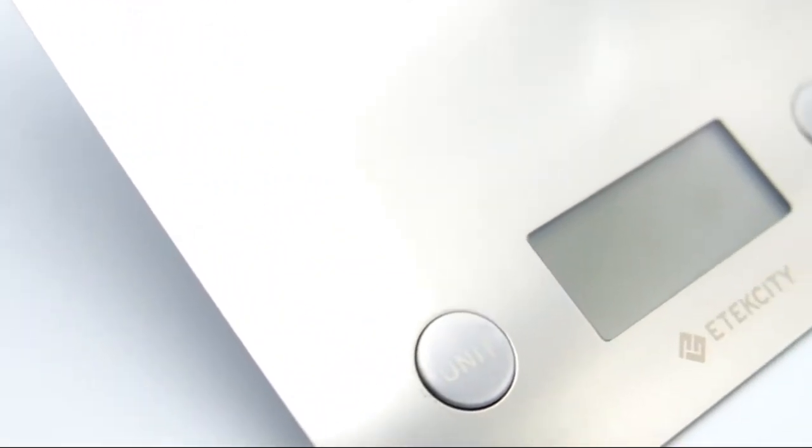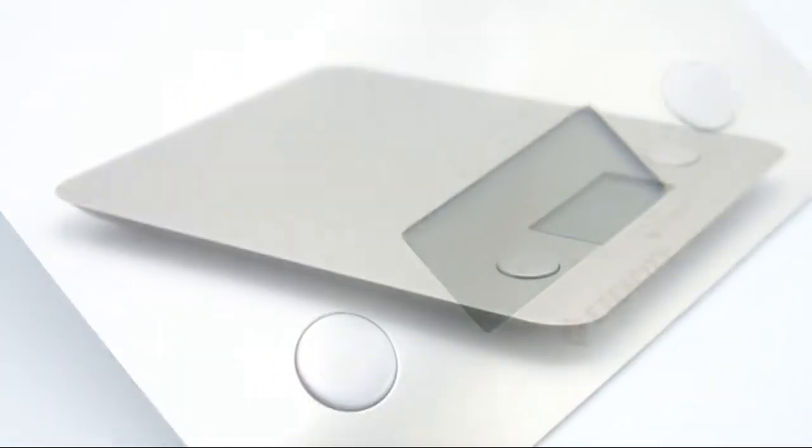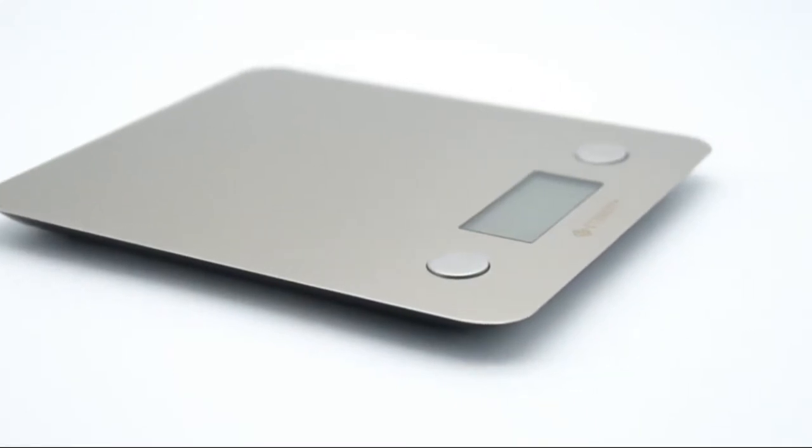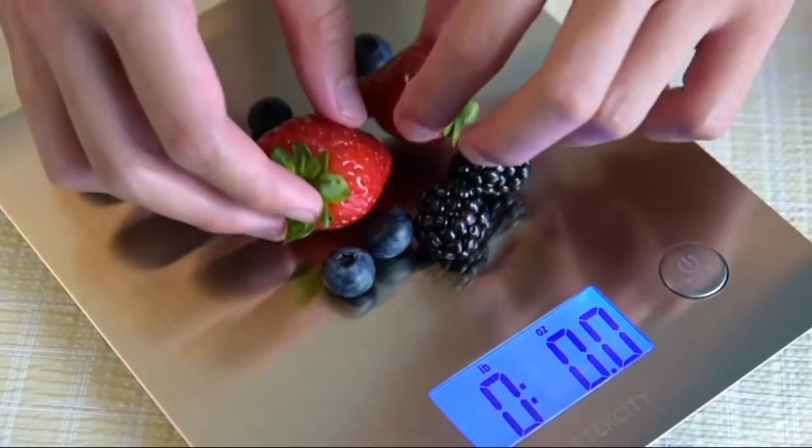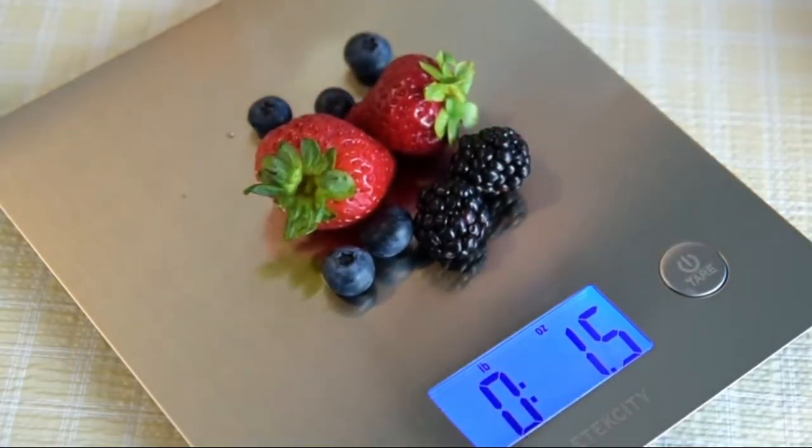Built with a durable stainless steel platform that's 30% larger than most kitchen scales, the EK6211 can handle larger quantities of food with its 11 pound weight capacity.